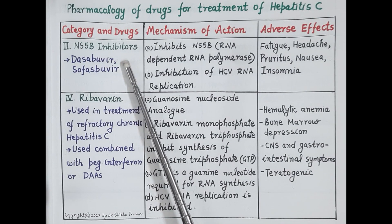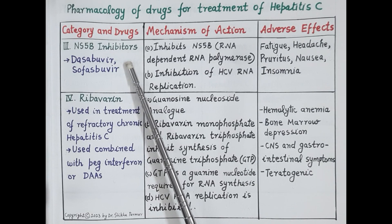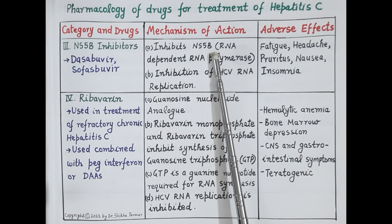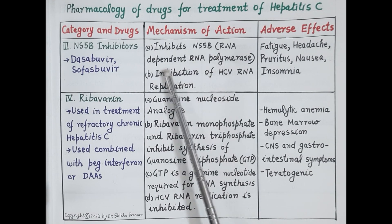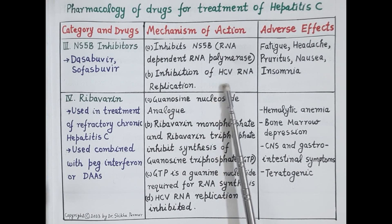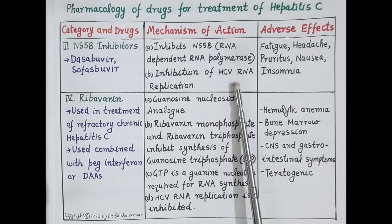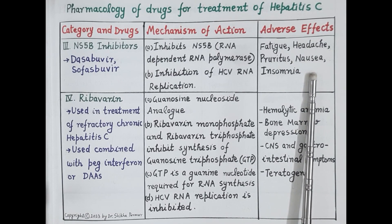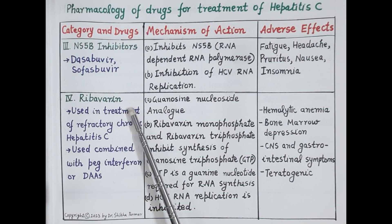Another class of direct-acting antivirals is NS5B inhibitors. These drugs inhibit NS5B protein, which is RNA-dependent RNA polymerase, and inhibition of this enzyme inhibits hepatitis C virus RNA replication. Adverse effects include fatigue, headache, pruritus, nausea, and insomnia.